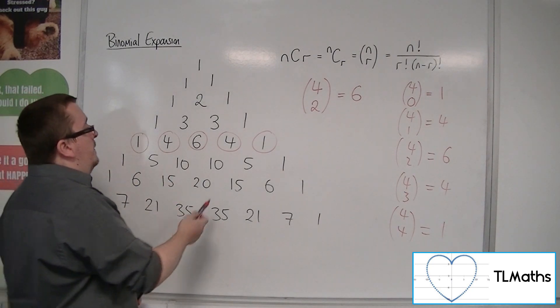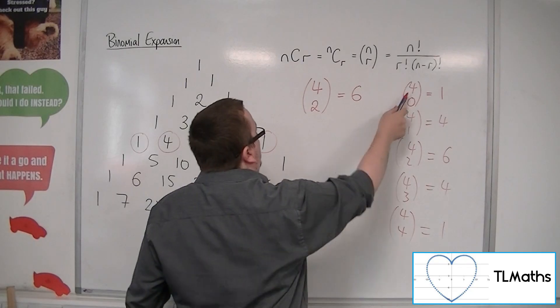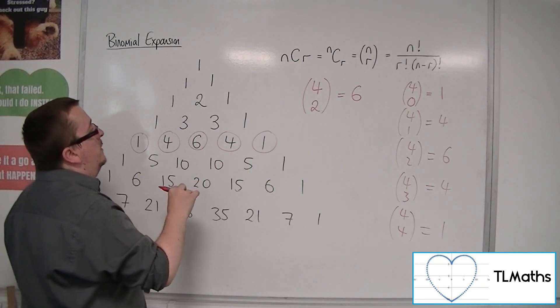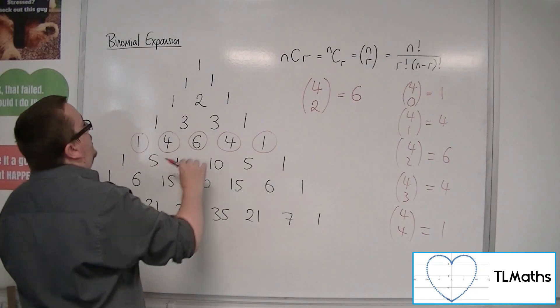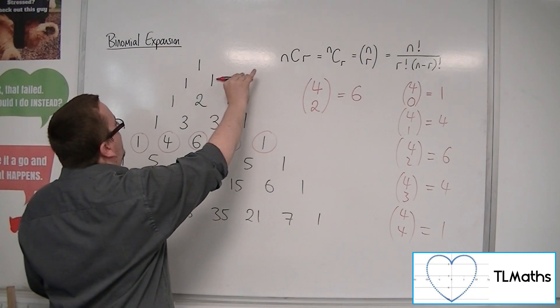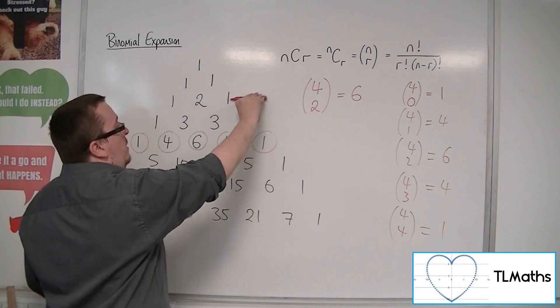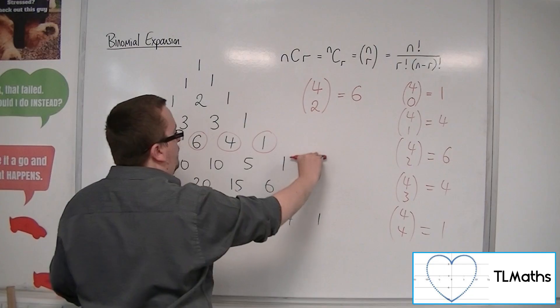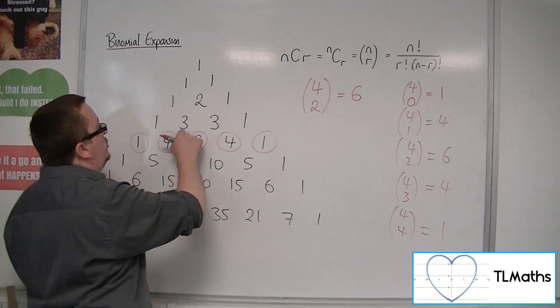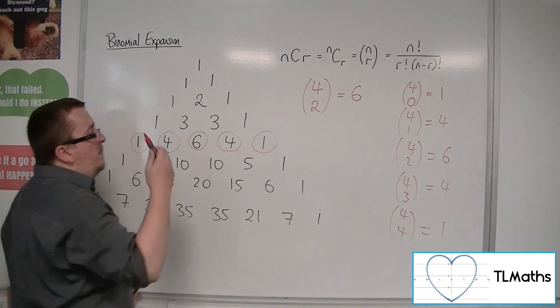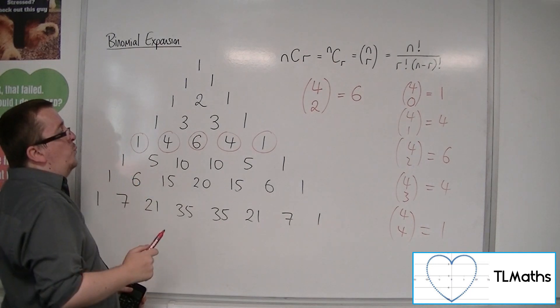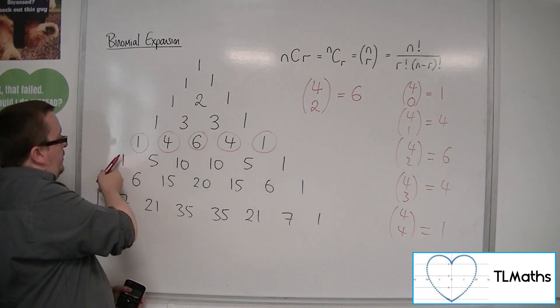The top number refers to the row you are on: the 0 row, first row, second row, third row, fourth row, fifth, sixth, seventh. This number identifies which row you're on. The bottom number is the position, telling you how far along you are. You must start with 0, 1, 2, 3, 4, 5.